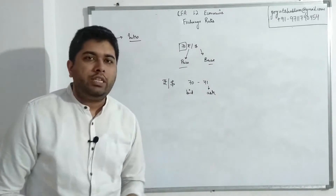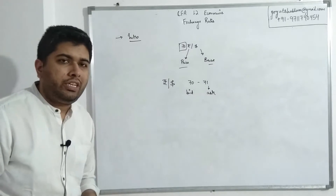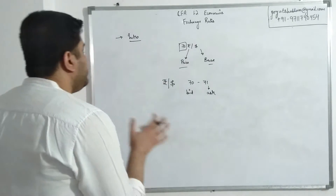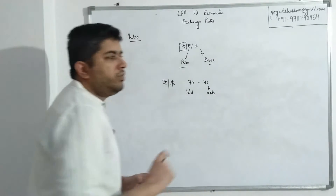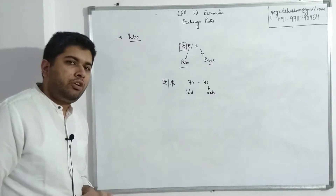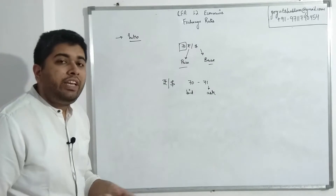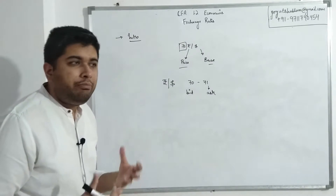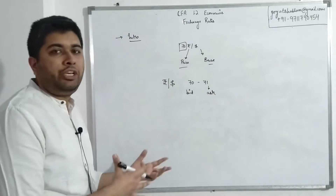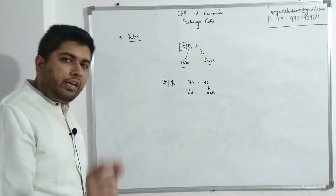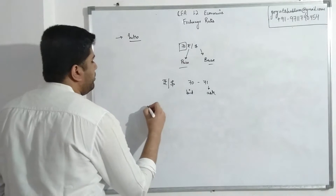Instead of one exchange rate for each currency pair, we now have two: bid and ask. We did have a small discussion about bid, ask, and spread in the portfolio management section, and all of that is applicable here as well. One of the main reasons why many students tend to be afraid of economics is that the calculations in this first session feel a little technical, mainly because you have two rates and the confusion is about which one to use in any particular calculation. So right away, I'm going to give you a golden rule.